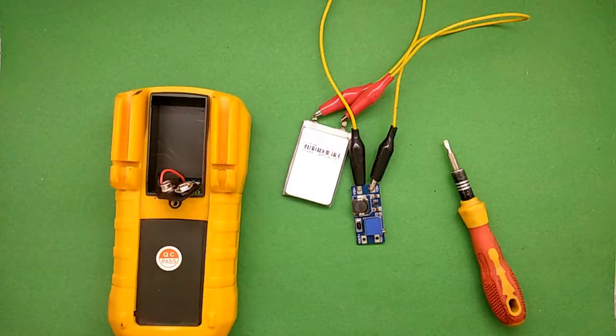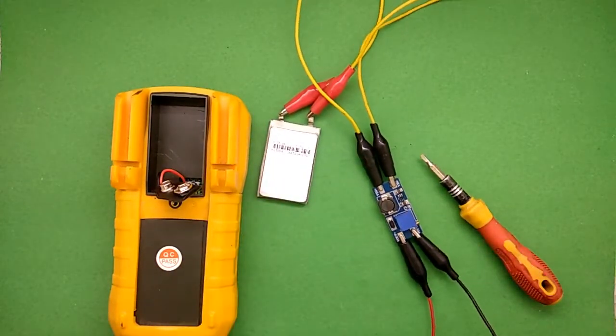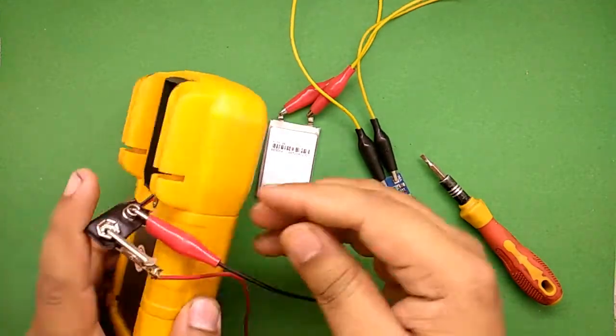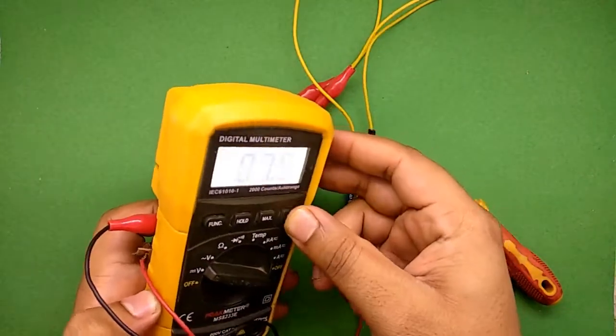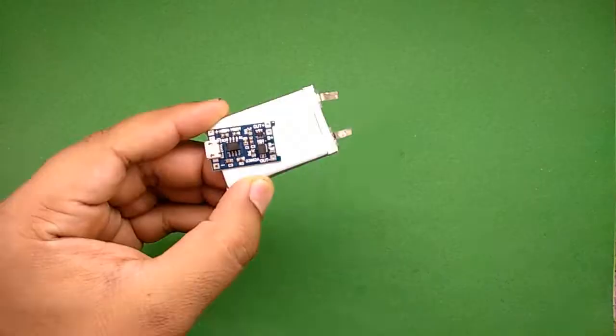Now first disconnect. Let's test it using alligator clips. I'm gonna connect it to the multimeter power input. Always remember the polarity. Always check it. And then as you can see it's working.